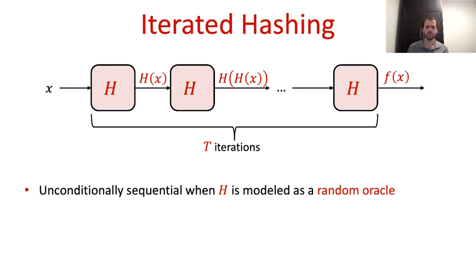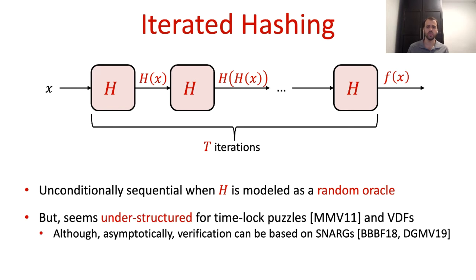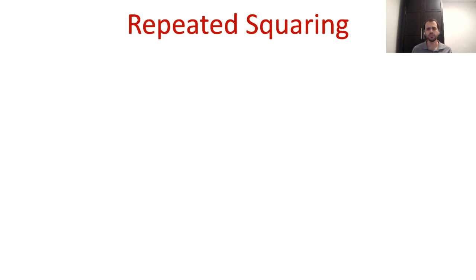One advantage of the iterated hashing function is that its sequentiality can be proven unconditionally when the hash function h is modeled as a random oracle. The downside of this delay function, however, is that it seems to be understructured to enable extensions to timelock puzzles or to VDFs. That is, it does not seem to support fast generation of input-output pairs for timelock puzzles, nor fast verification for VDFs.